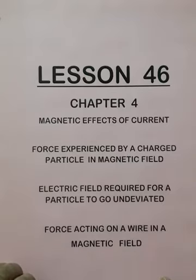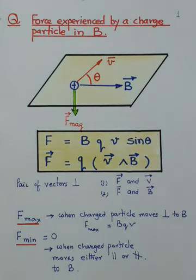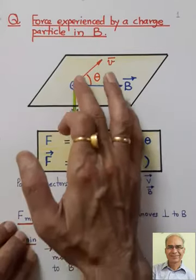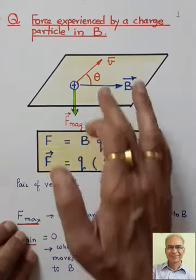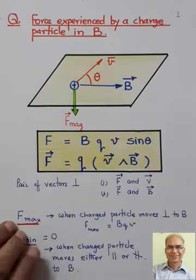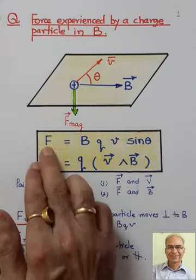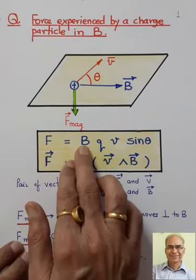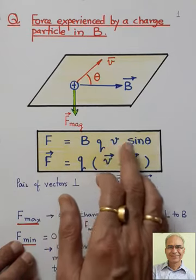So let us begin with the first part. Students, we are learning that if a charged particle were to move in a magnetic field with a speed V, making some angle theta, then it will experience some force. The formula for the magnetic force experienced by the charged particle is given by BQV sin theta.